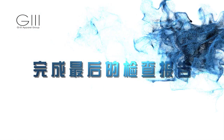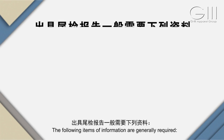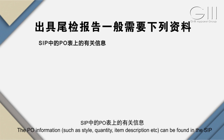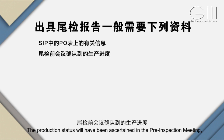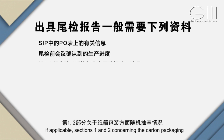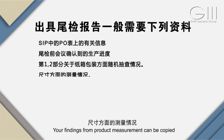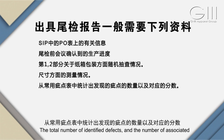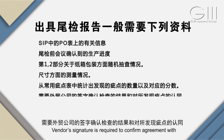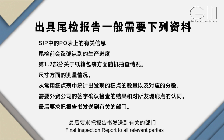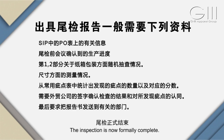完成最后的检查报告。出具验检报告一般需要下列资料：SIP中PO表上的有关信息、验检前会议确认到的生产进度、纸箱包装方面随机抽查情况、尺寸方面的测量情况，以及从瑕疵统计表中统计出发现的瑕疵的数量。需要外贸公司的签字确认检查结果和对所发现瑕疵的认同。最后，要求把报告书发送到有关的部门，验检正式结束。